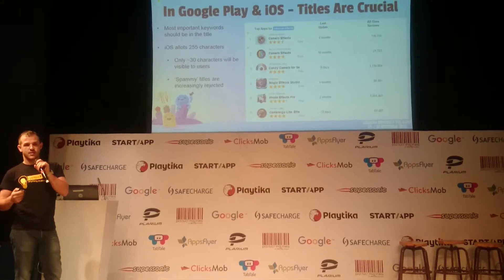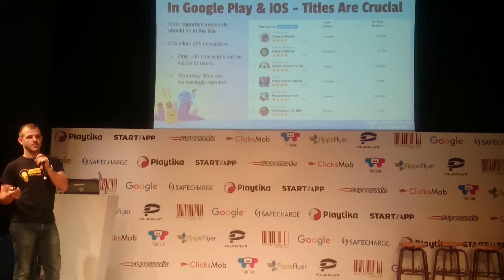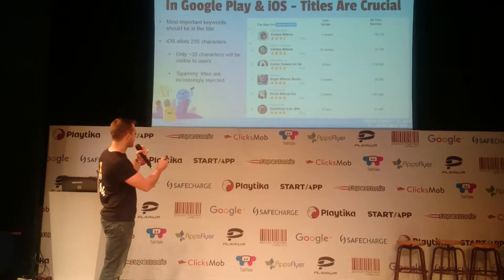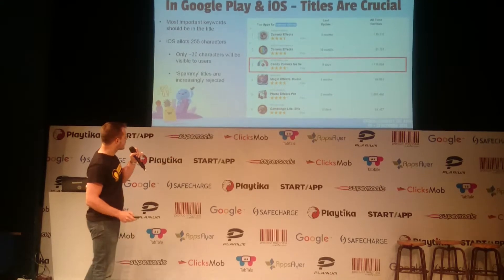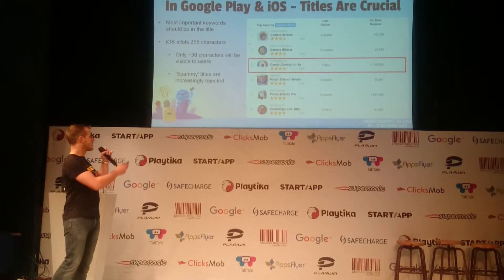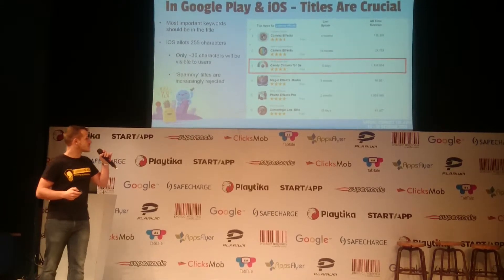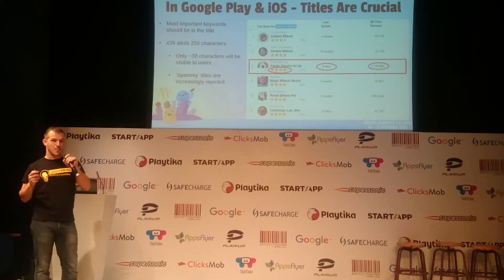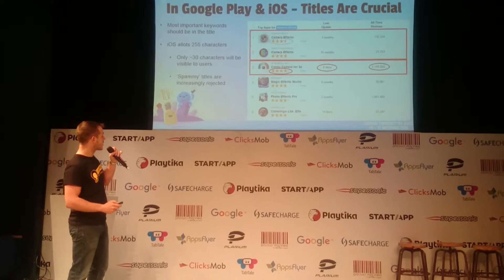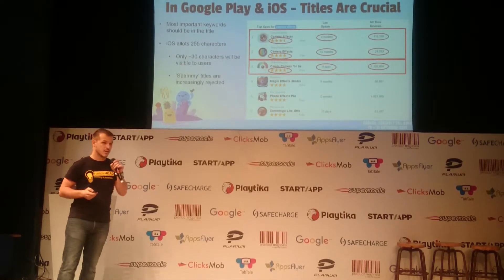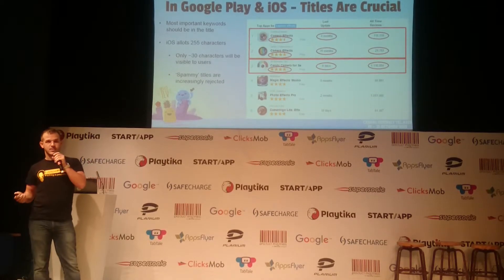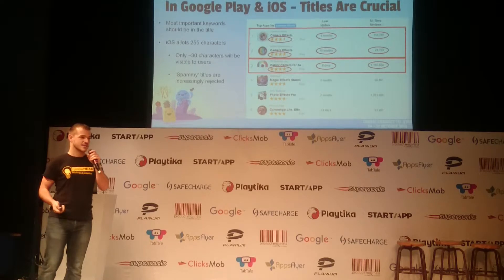The first thing I'm going to talk about is titles. Titles in iOS and Google Play are crucial — having important keywords in your title is crucial. Take a look at the top-ranking applications for the keyword 'camera effects.' This application in third place, Candy Camera for Selfie, has over a four-star rating, over a million reviews, and is frequently updated. Despite that, it is being outranked by two applications which both have under four stars, either a tenth or a fiftieth of the number of reviews, and one hasn't been updated in over a year — simply because they have 'camera effects' in their title.